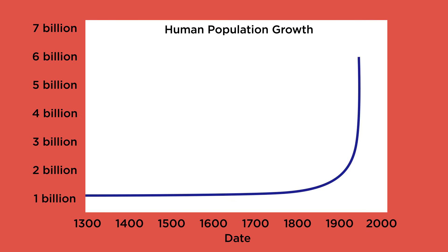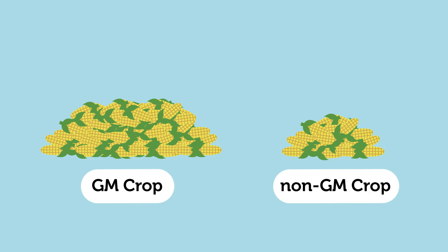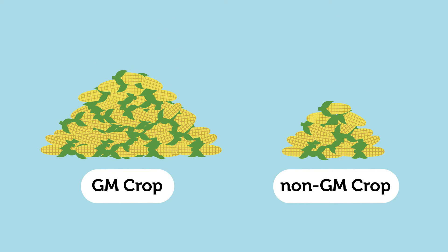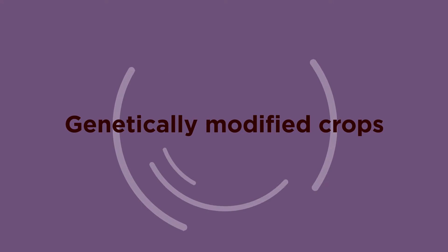As the human population increases, there is a higher demand for food, and it's often difficult to grow enough food to provide everyone with a balanced diet. Growing GM crops is a partial solution to this problem, because GM crops tend to have higher yields than conventional crops. They can also offer extra nutritional value. Let's take a look at a few examples of genetically modified crops so we can see how this is possible.